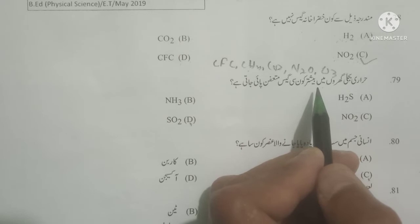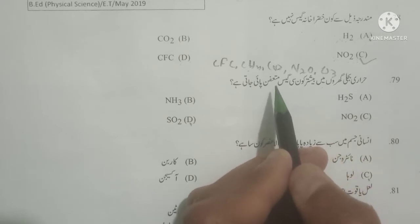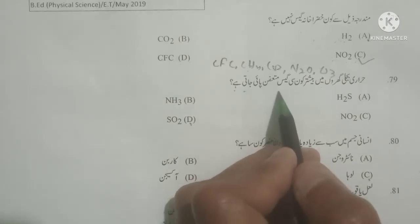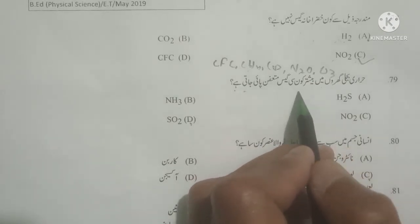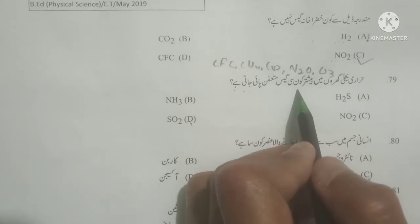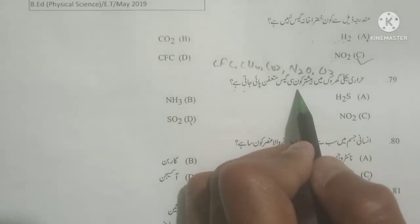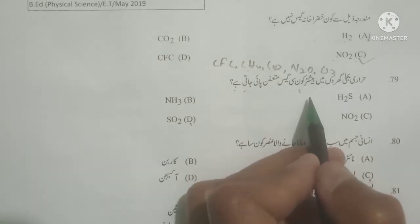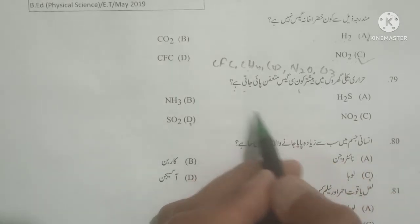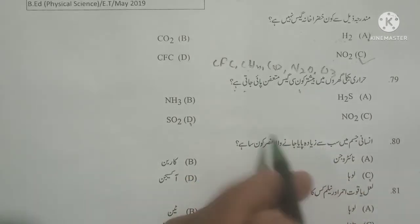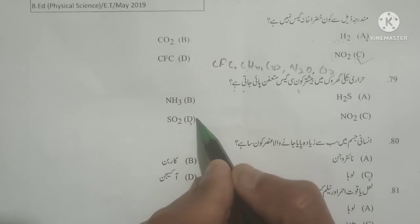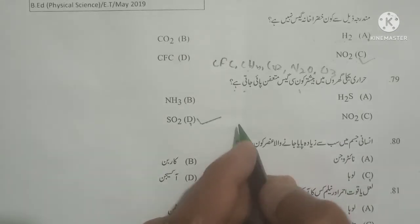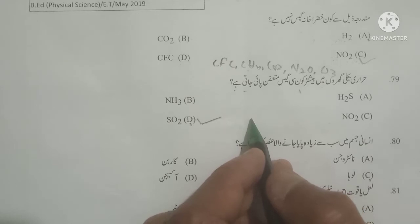Next question: Harari bijjli gharo mein bistar kon si gas much often paai jaati hai? Which kind of flue gas is found in thermal power plants? As you know, nitrogen dioxide and sulfur dioxide are found in flue gases, produced when fossil fuels are burned in steam boilers. Options given: hydrogen sulfide, ammonia, nitrogen dioxide, sulfur dioxide — sulfur dioxide is the most appropriate answer as it is produced in the maximum amount. Flue gases are also called exhaust gas or stack gases.